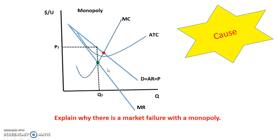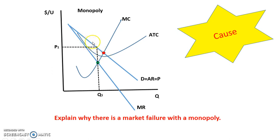When you look at this graph here, what you can see is that the demand curve is downward sloping, unlike in perfect competition where it's perfectly elastic. And then you have a marginal revenue curve that's less than the demand curve. The reason why the marginal revenue curve is less than the demand curve is because for each additional unit that the monopoly produces, they have to lower the price not just for that next unit, but for all previous units. And that is why the marginal revenue curve is less than the demand curve.